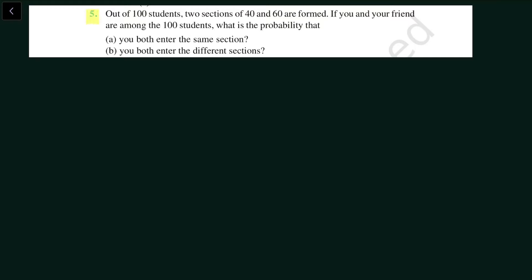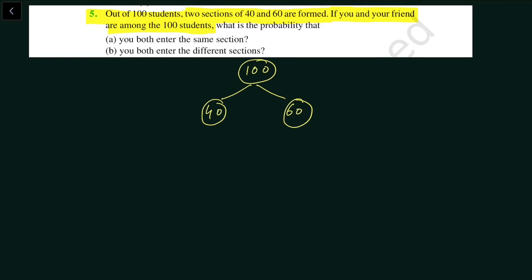Out of 100 students, two sections of 40 and 60 are formed. We have 100 kids in class and we will create two sections of 40 and 60. If you and your friend are among the 100 students, you and your friend are also in the same section — that is, you both enter the same section.